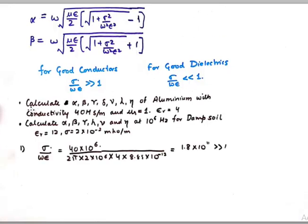For example you get two questions. The first question says you need to calculate alpha, beta, gamma, delta (delta is by the way skin depth), nu the velocity, lambda the wavelength, and eta the characteristic impedance of aluminum with conductivity given, mu r given, epsilon r given. So in this case, the first step is to calculate loss tangent.